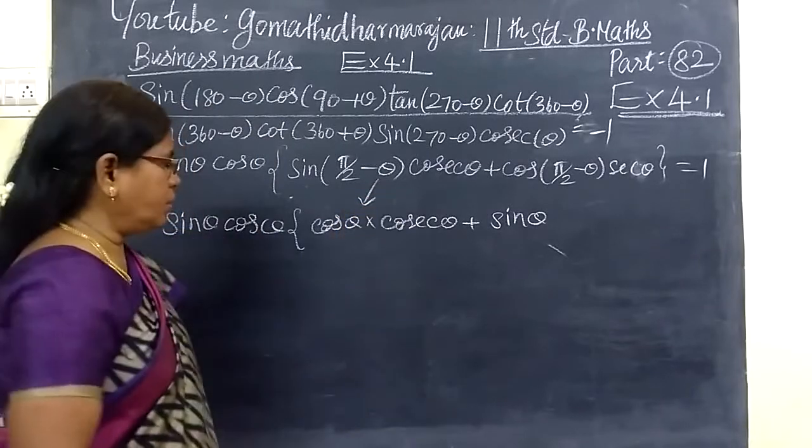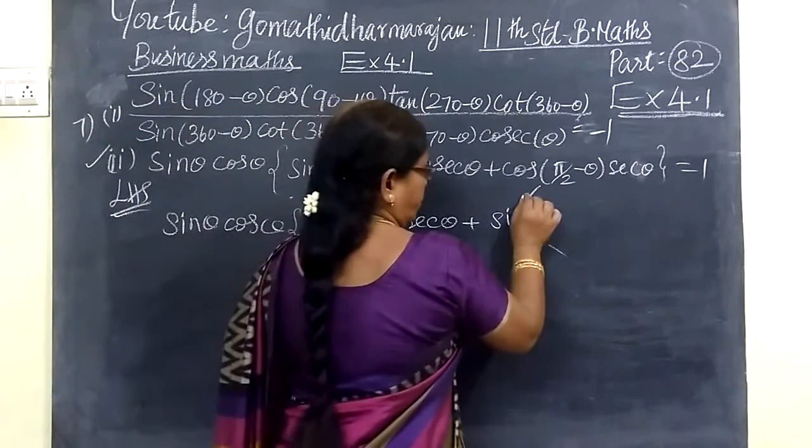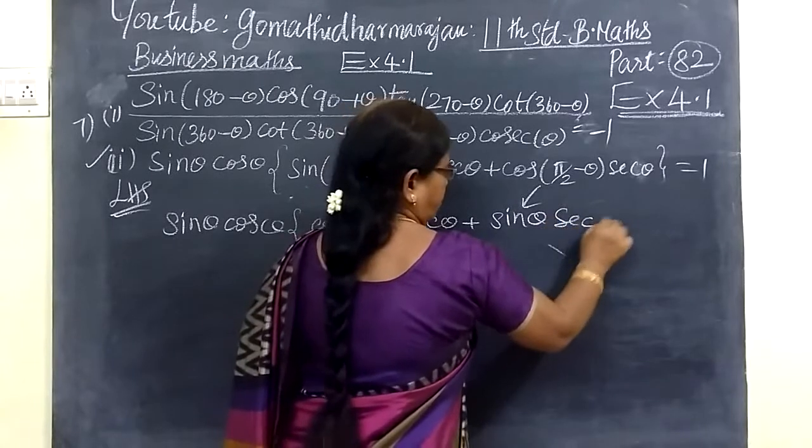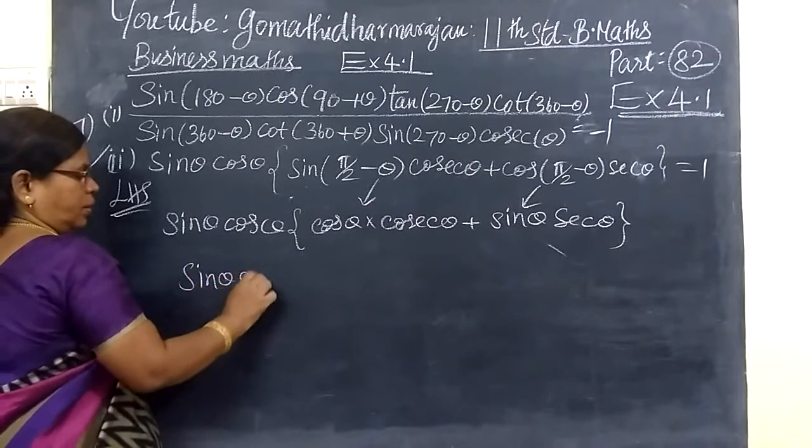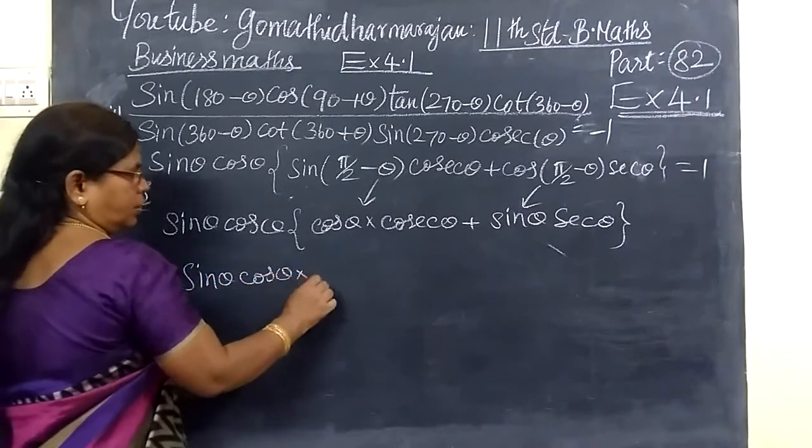After that, sin of 90 minus θ cos θ, then cos of 90 minus θ sin θ, into sec θ tan θ cos θ.